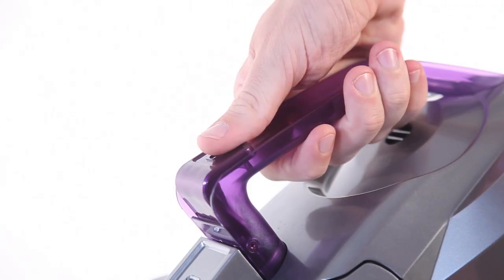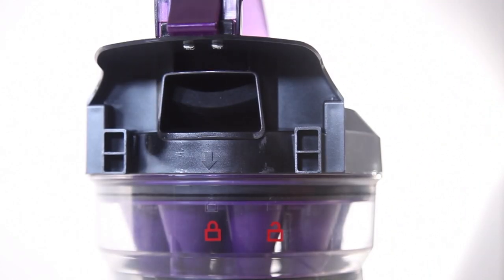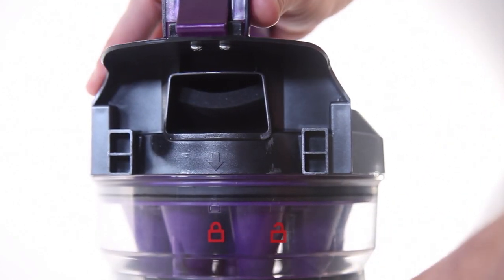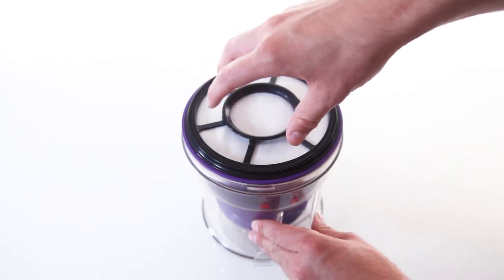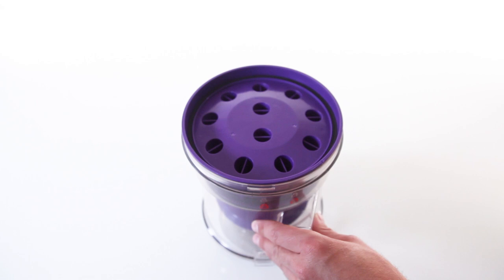Firstly, release the dustbin from the vacuum body, then twist the grey lid of the bin to the right until the arrow is pointing over the unlocked padlock and proceed by lifting the filter away from the dustbin.